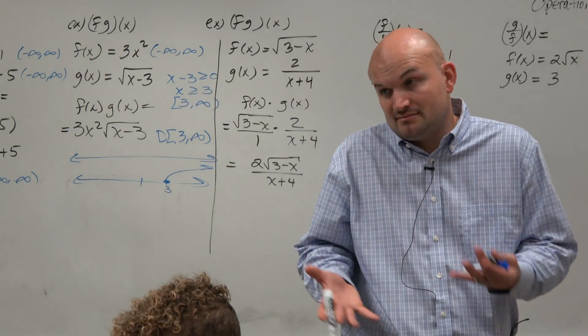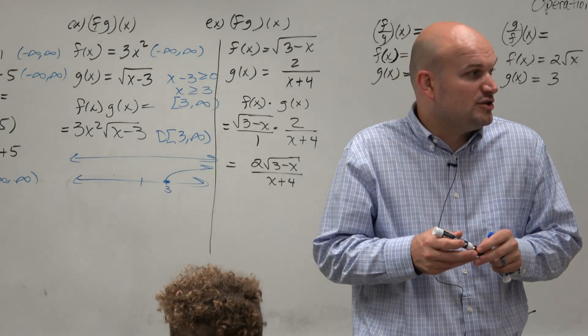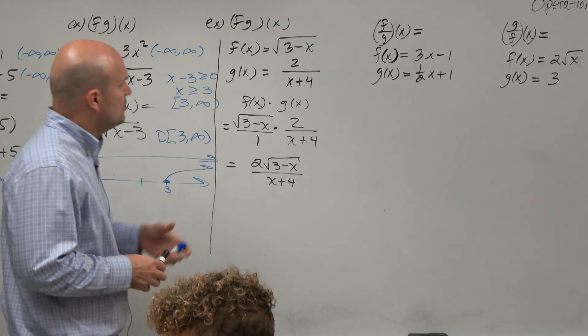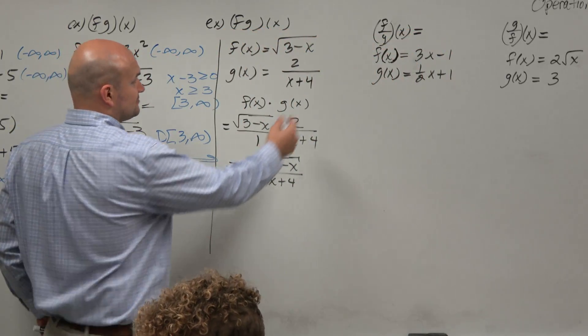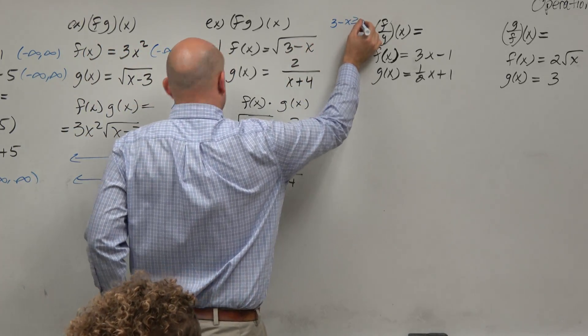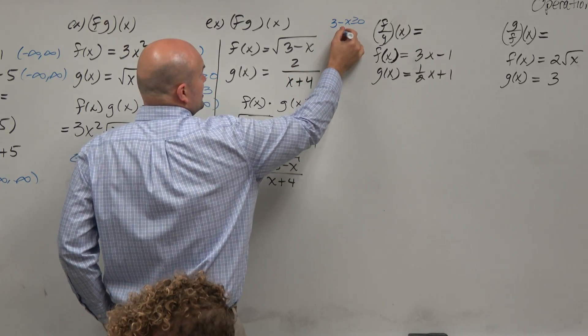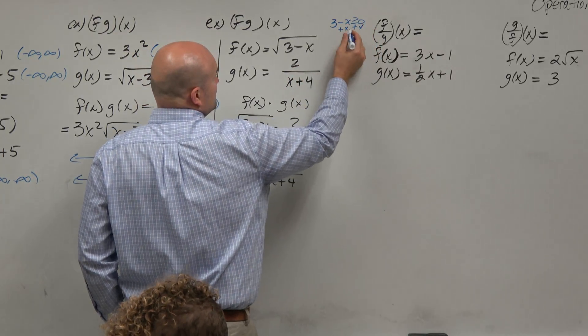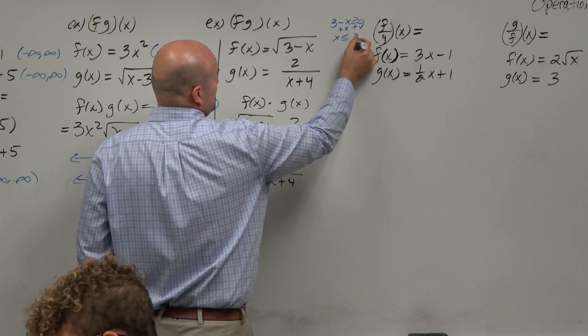But now we've got to figure out the domain. So again, let's go back to our domain restrictions. Here we have a radical. Same thing. 3 minus x has to be greater than or equal to 0, right? So I could just add the x to both sides rather than dividing. So x has to be less than or equal to 3.